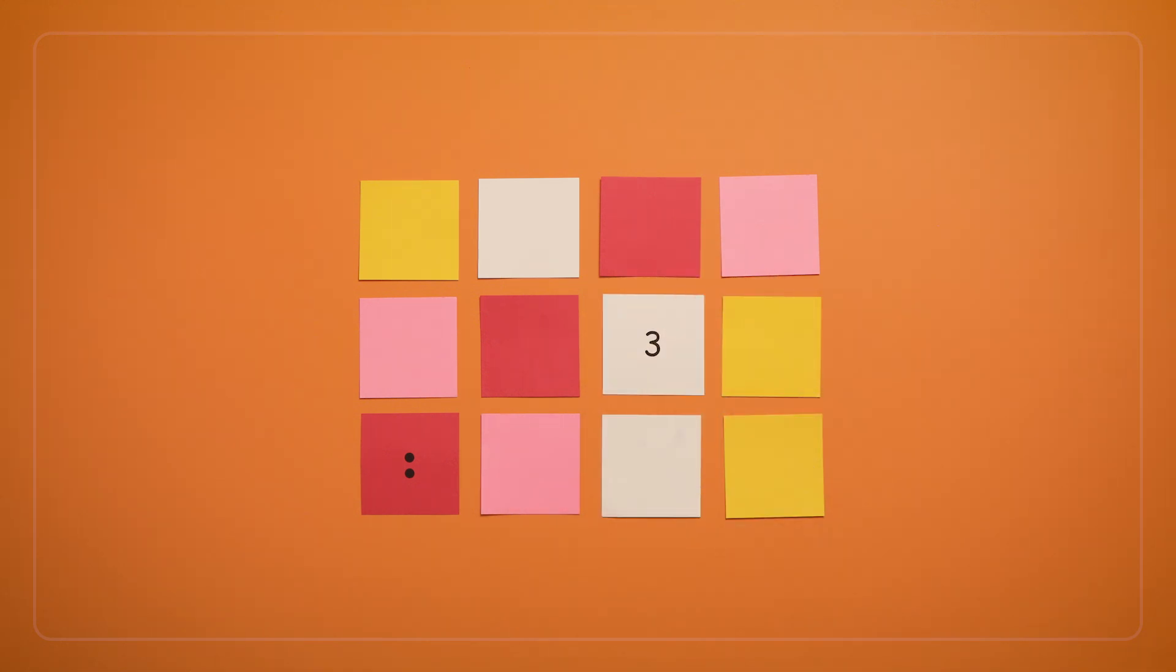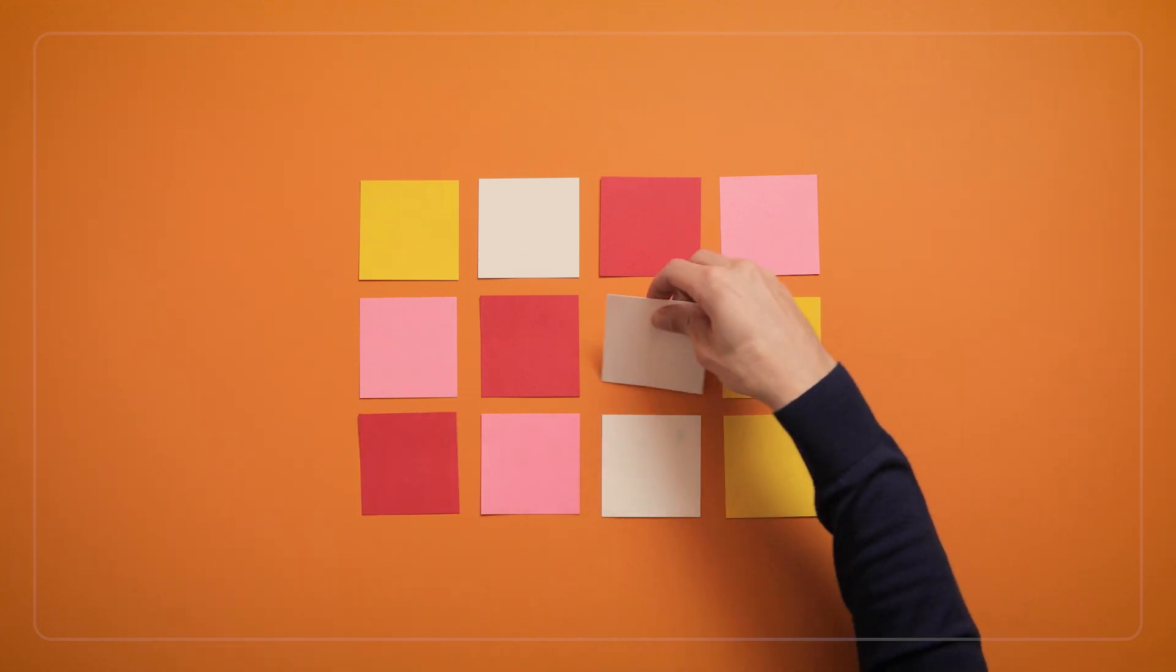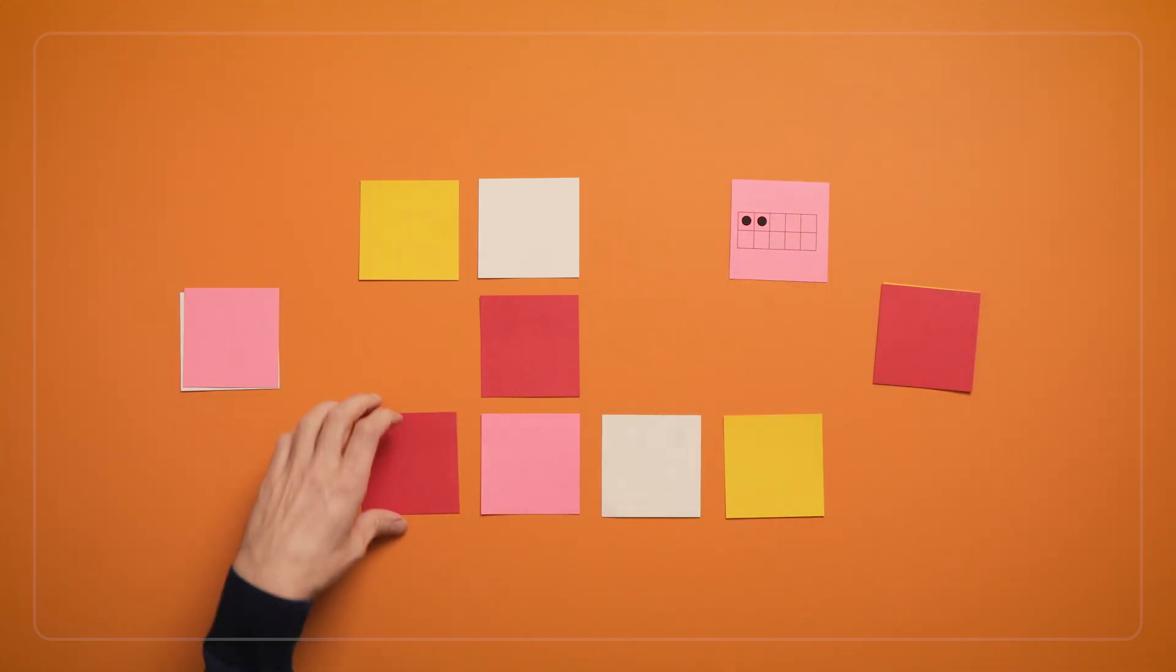So when we see that another player turned over a two card, we need to keep the location of that two in our working memory while they finish their turn and while we turn over and think about other cards.